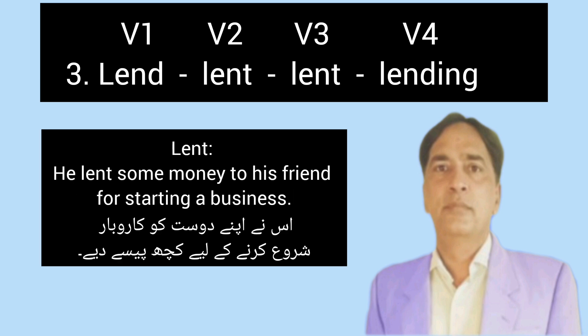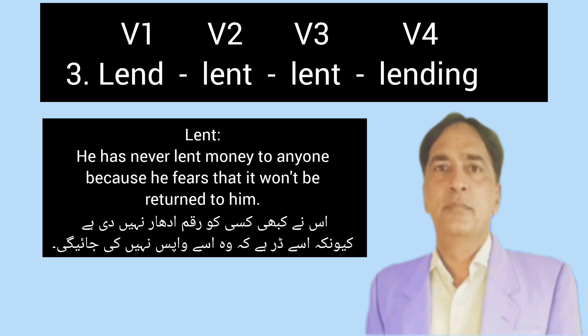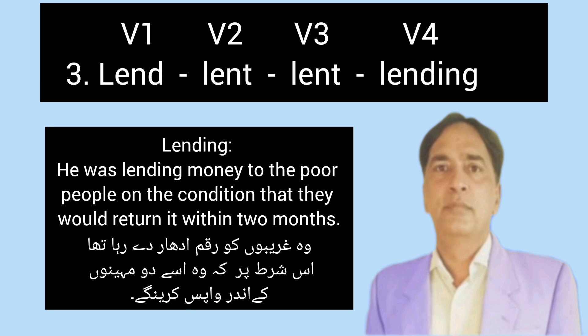Second form lent: He lent some money to his friend for starting a business. Third form lent: He has never lent money to anyone because he fears that it won't be returned to him. Fourth form lending: He was lending money to the poor people on the condition that they would return it within two months.